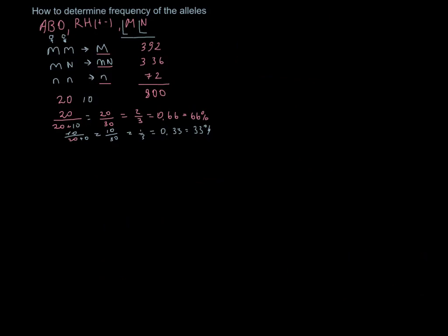using our example. And let's say that p is frequency of the M allele and q is the frequency of the N allele. Then p plus q equals to 1.